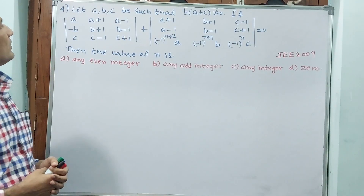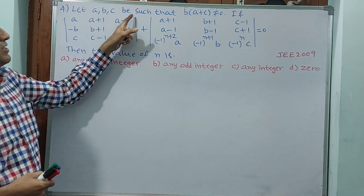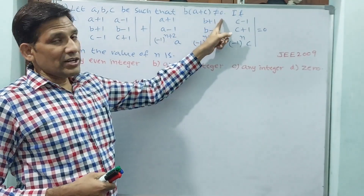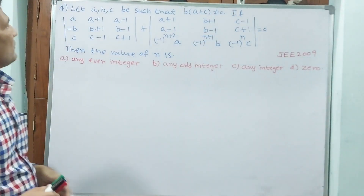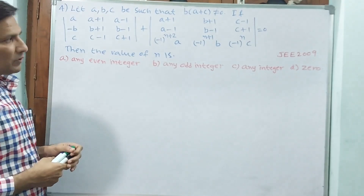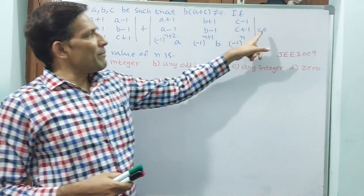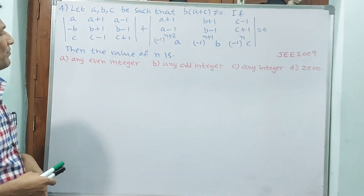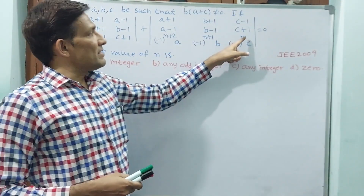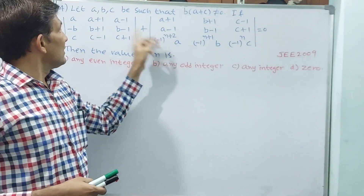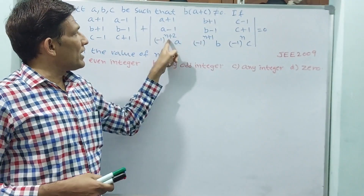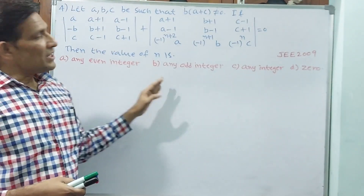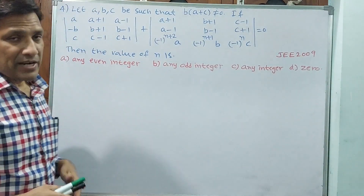See question number four. Let A, B, C be such that B(A+B) is not equal to 0. Two determinants are being added and made equal to 0, making this a determinant equation. The value of n they are asking — n is in the second determinant's third row as n+2, n+1, n — and the options are even integer, odd integer, any integer, or 0.